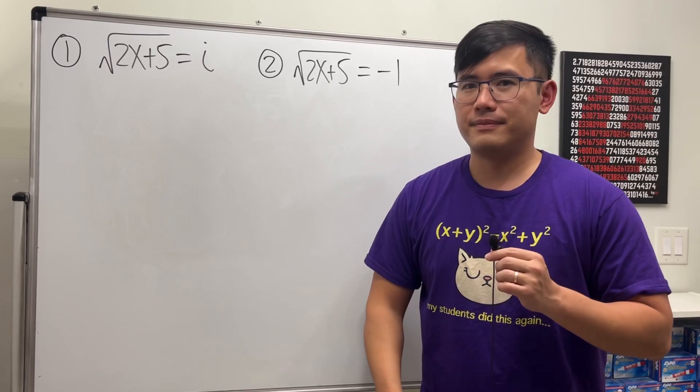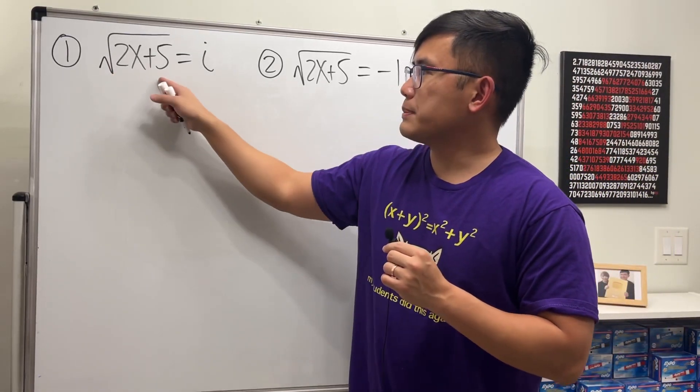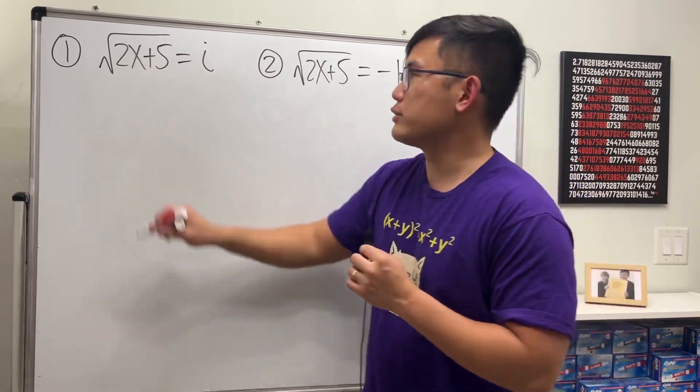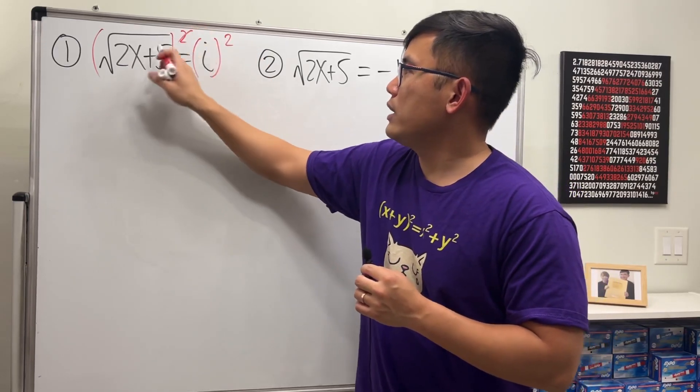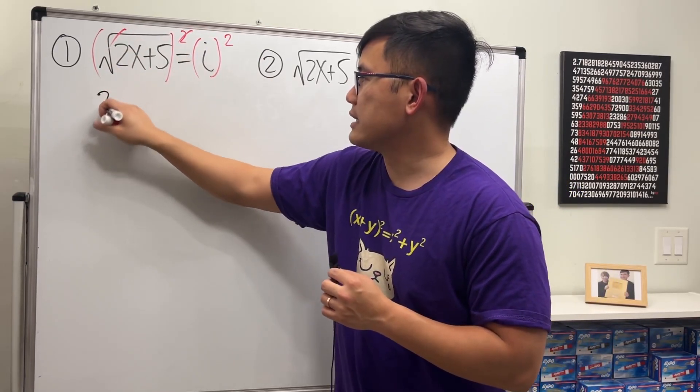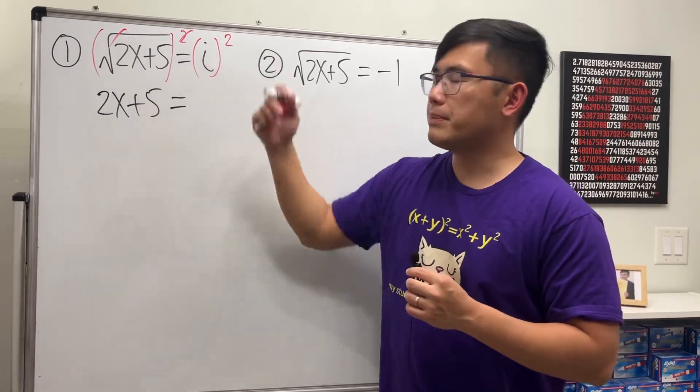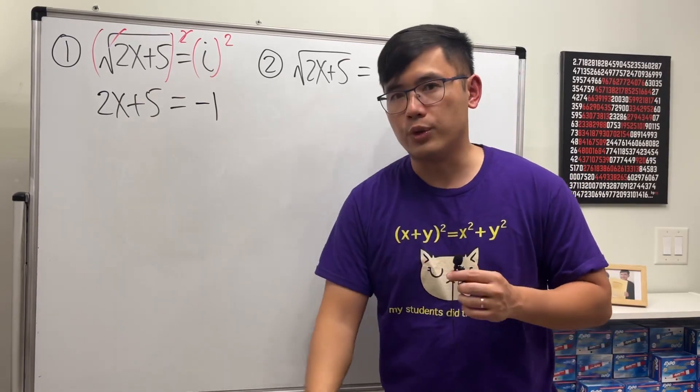Let's take a look at the first one. We have 2x plus 5 inside the square root. How do we get rid of the square root? Well, just square both sides. Let's do that. The square root cancels and we just have the inside, which is 2x plus 5, and that's equal to i squared, which equals negative 1 because that's the definition of the imaginary unit i.